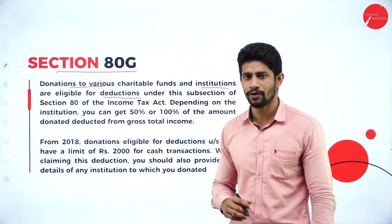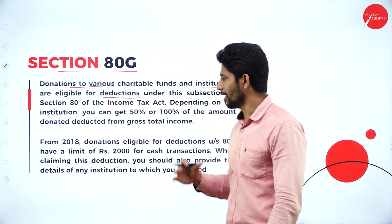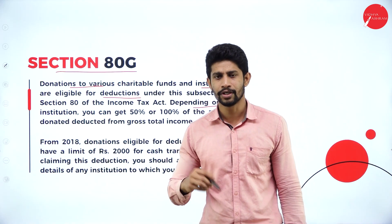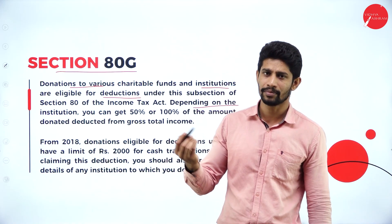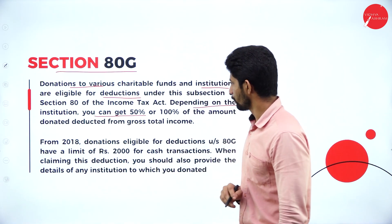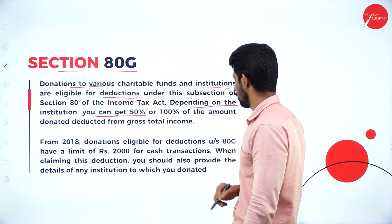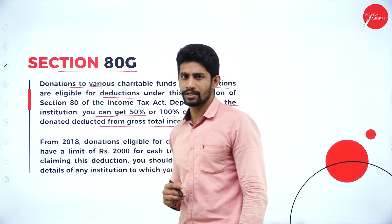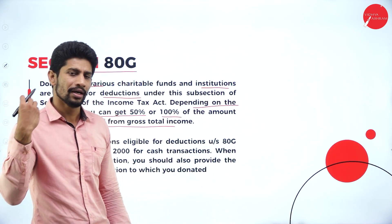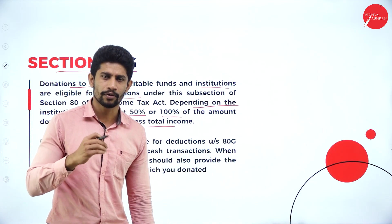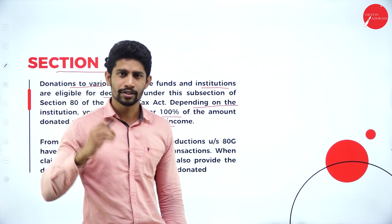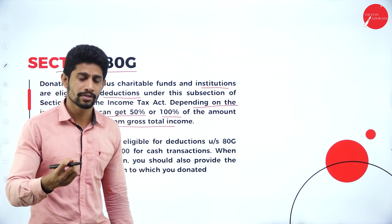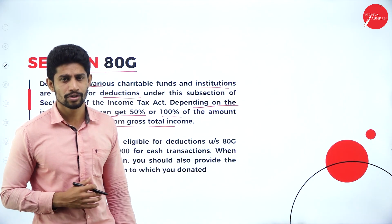Under Section 80G, deductions are given for donations made by an individual or HUF. Depending on the institution or charitable trust, you can get up to 50% or 100% of the amount donated deducted from your gross total income. Based on which institution or charitable trust you are giving the donation, either 50% or 100% of your contribution will be deducted from your gross total income.